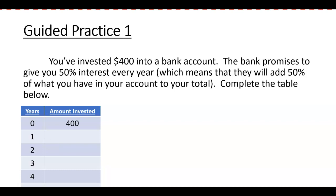Suppose you invested $400 into a bank account and the bank promises to give you 50% interest every year, meaning they're adding 50% of what you have to your account total. If you want to increase something by 50%, you multiply by 1.5 — because you're finding 50% and then adding it back, so you do one plus the percentage in decimal form.